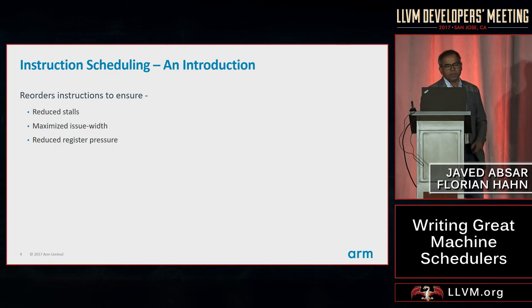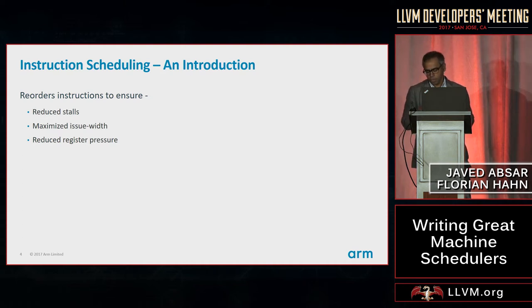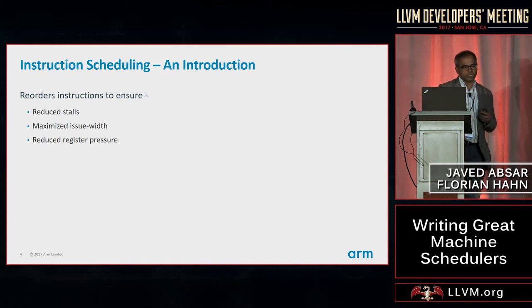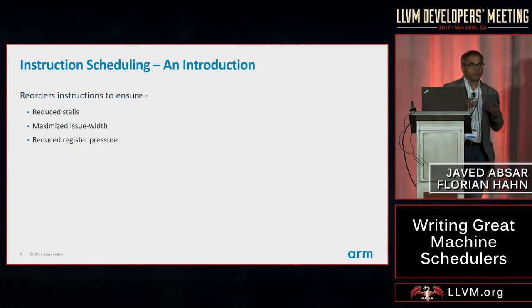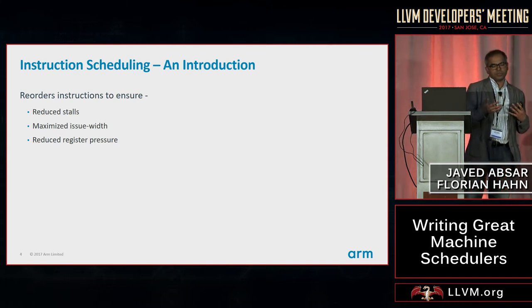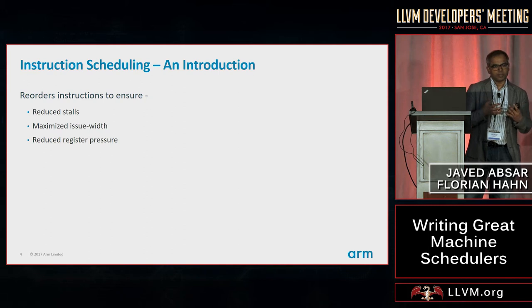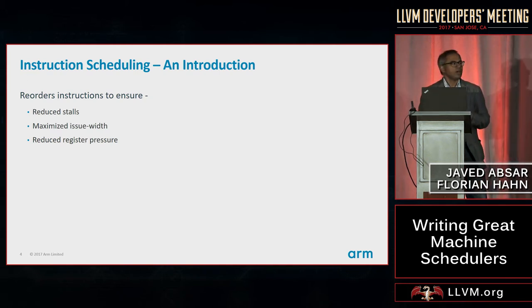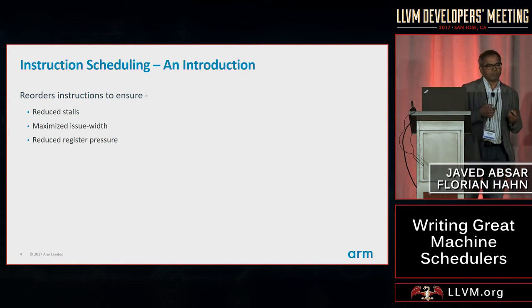A quick recap: scheduling is the reordering of instructions to reduce stalls, so that you have fewer cases where instructions are sitting and waiting in dispatch, unable to issue because input operands are not ready or functional units are not available. You want to maximize the issue width, and you want the sequence of instructions presented to the register allocator — this is scheduling before register allocation — to result in fewer spilling instances. These goals are quite big and sometimes conflicting with each other.